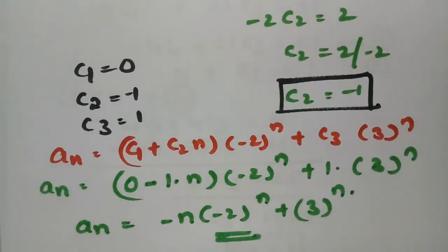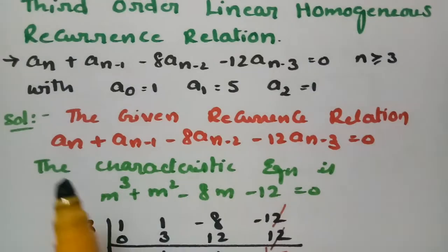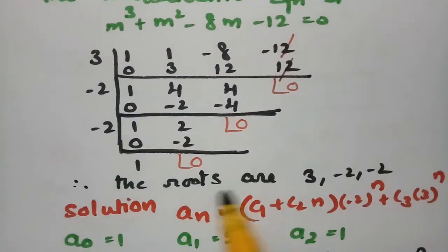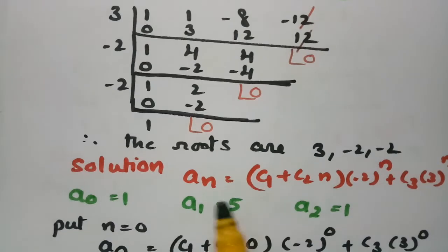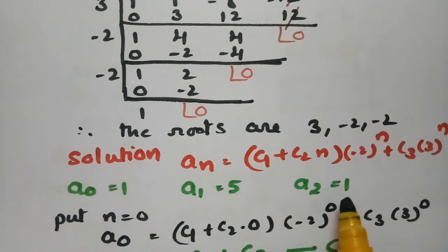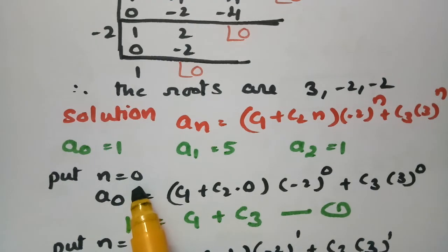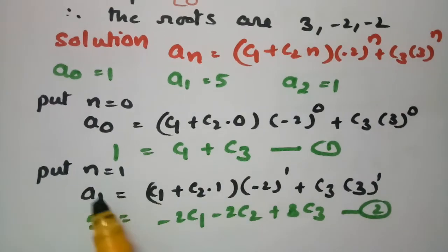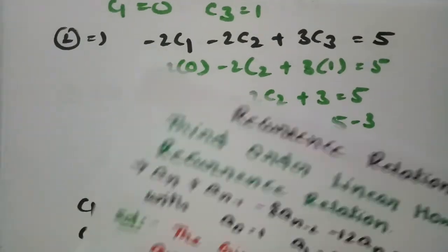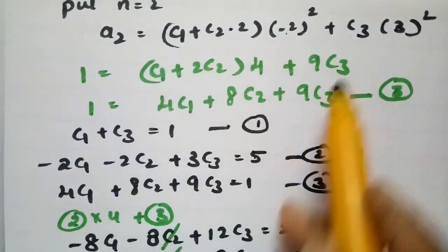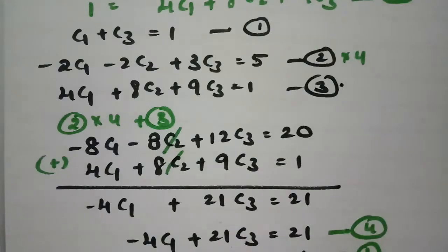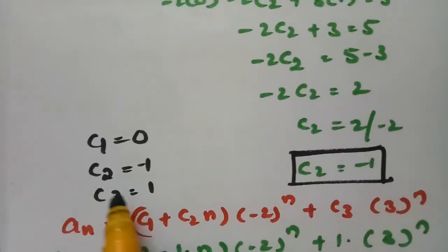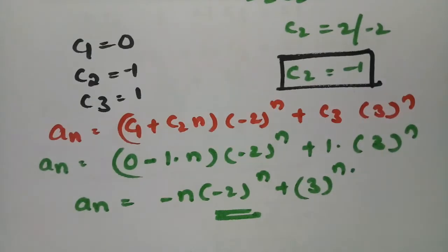This is how we solve it — it's simple if you follow these steps. First find the characteristic equation, then find the roots (3, minus 2, minus 2). Use initial conditions a_0 equal to 1, a_1 equal to 5, and a_2 equal to 1 to set up three equations. Solving gives c1 equal to 0, c2 equal to minus 1, c3 equal to 1, leading to the final solution. Thank you for watching.